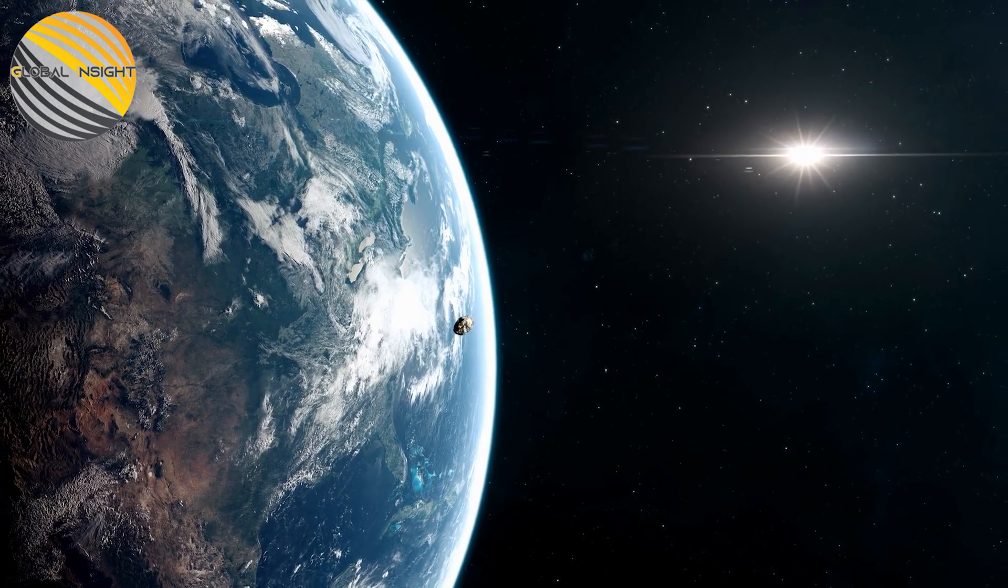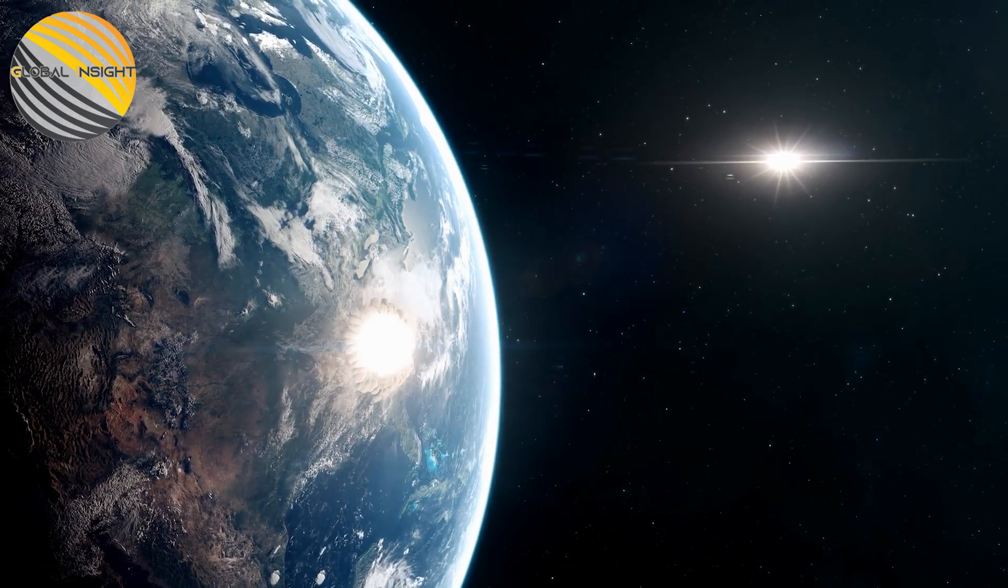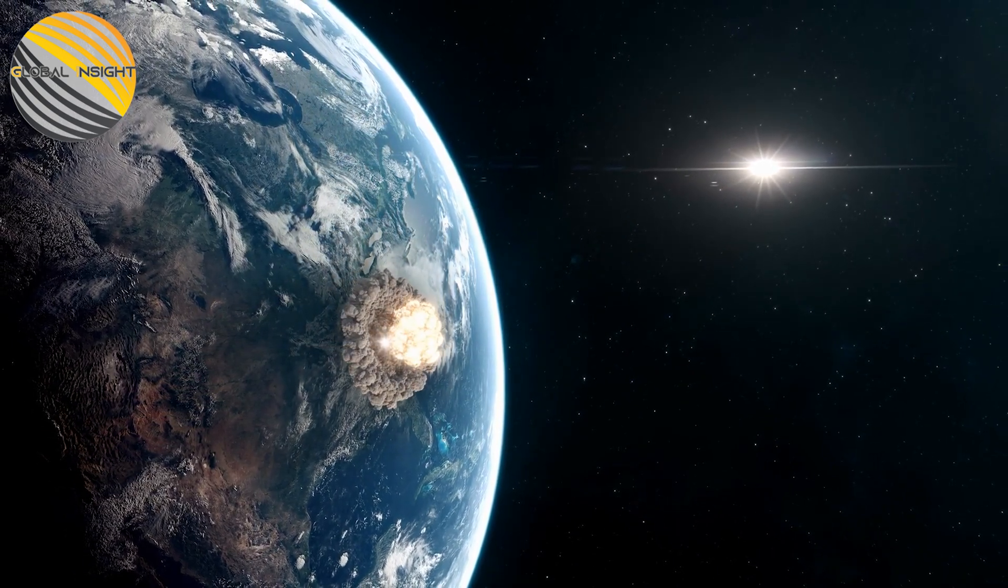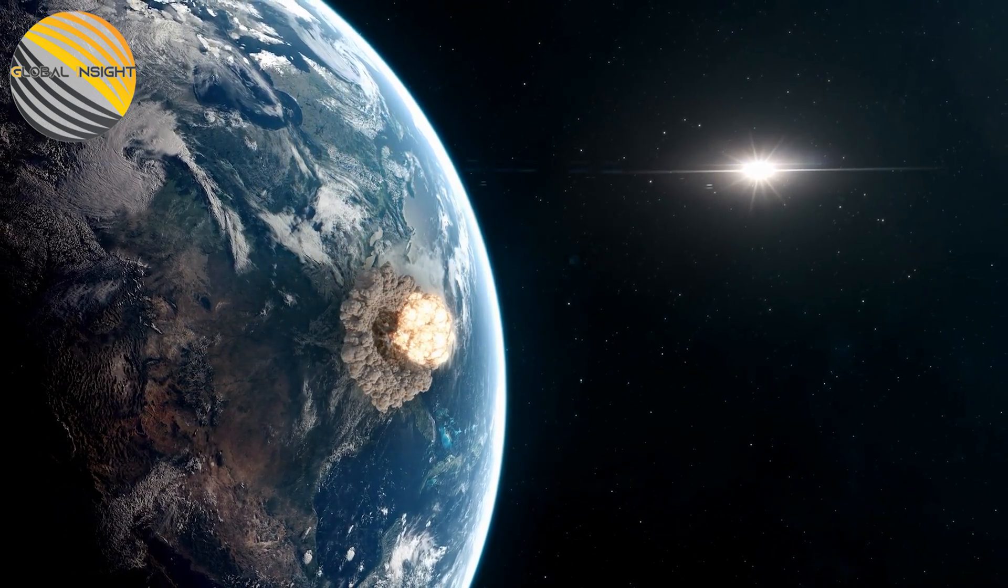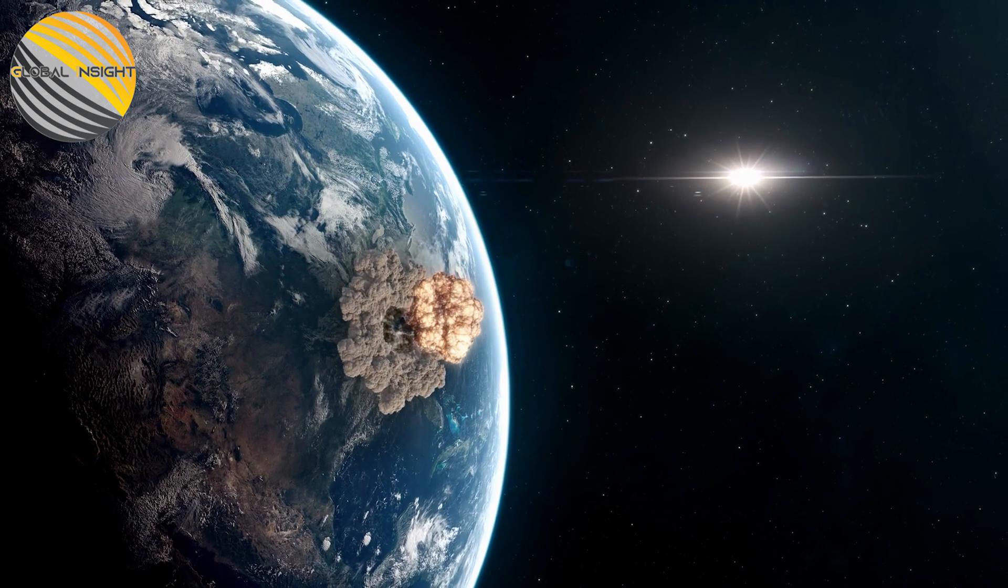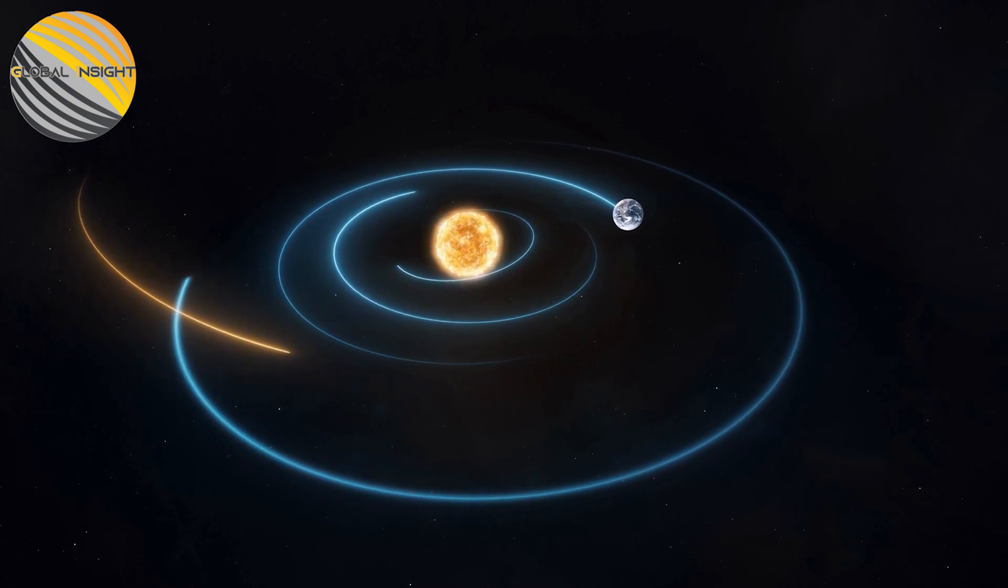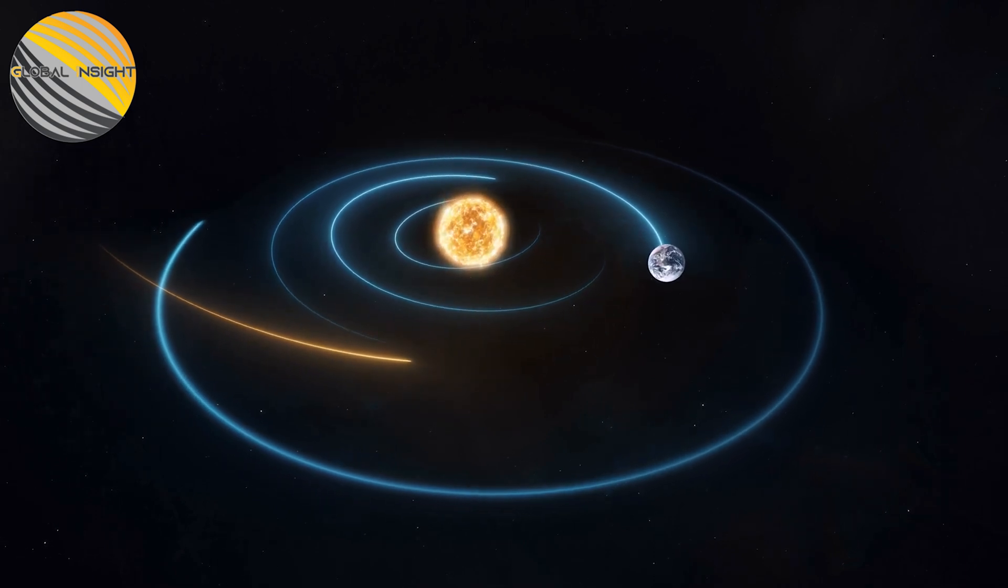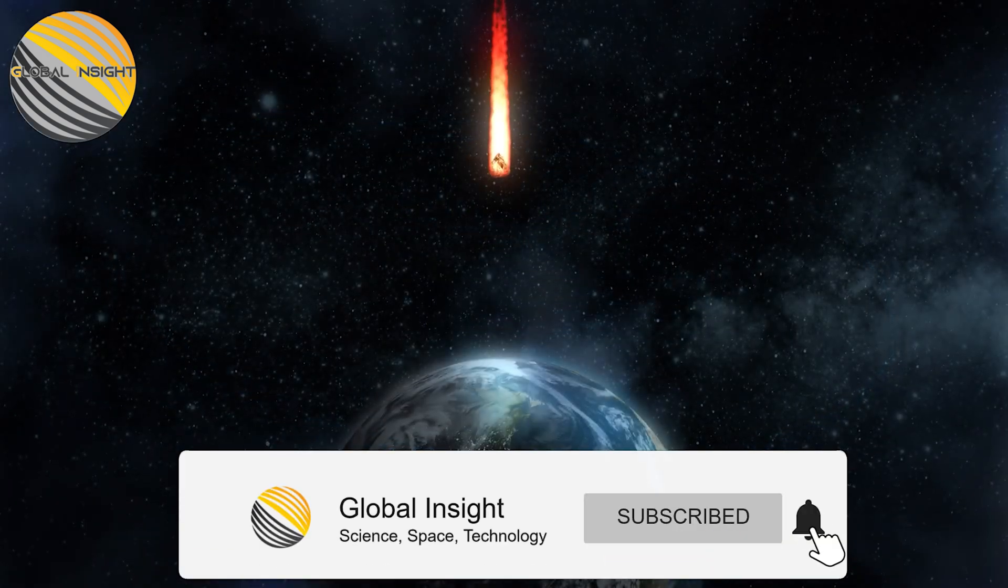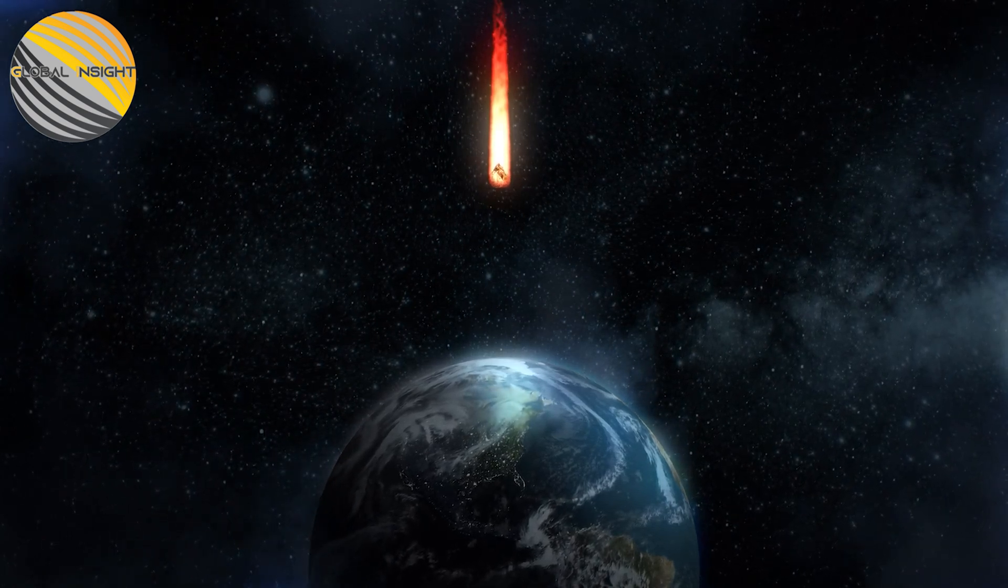We had a close call with the asteroid 2021 UA1 in 2021. Over the Antarctic, it came just a few thousand kilometers from Earth. This is too close for comfort in cosmic terms. This is because 2021 UA1 was only two meters across, it did not pose a significant threat. It is not uncommon for objects of this size to come into contact with Earth and there are probably hundreds of millions of them in our solar system. In these instances, there is little risk to life because the majority of the object burns away in the atmosphere, producing a spectacular light show.